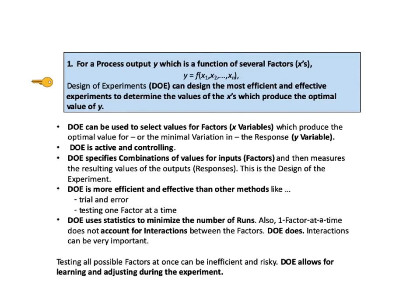KTU number 1 says: for a process output y, which is a function of several factors x's — that is, for y equals f of x1, x2, ..., xn — design of experiments, DOE, can design the most efficient and effective experiments to determine the values of the x's which produce the optimal value of y.